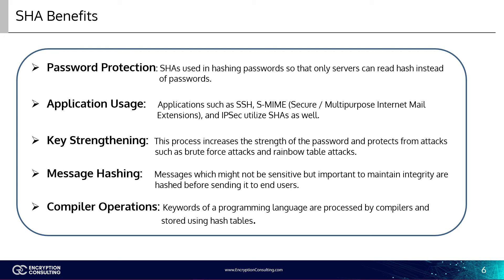With message hashing, messages which might not be sensitive but are important to maintain integrity are hashed before being sent to end users. This process provides end users with a guarantee that the sender is genuine and that they can trust the message. With compiler operations, keywords of a programming language are processed by compilers and stored using hash tables to differentiate between keywords like 'if', 'else', 'for', and other identifiers. To successfully compile the program, the compiler stores all these keywords in a set which is implemented using a hash table.